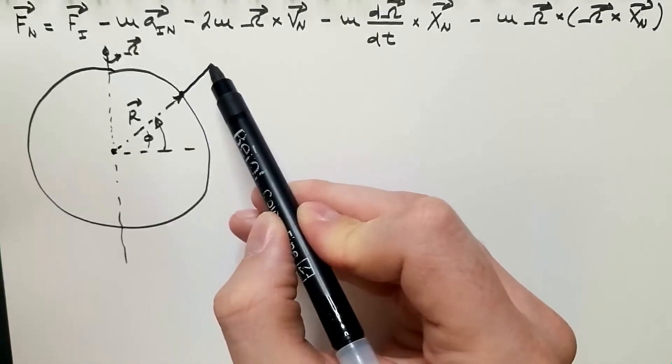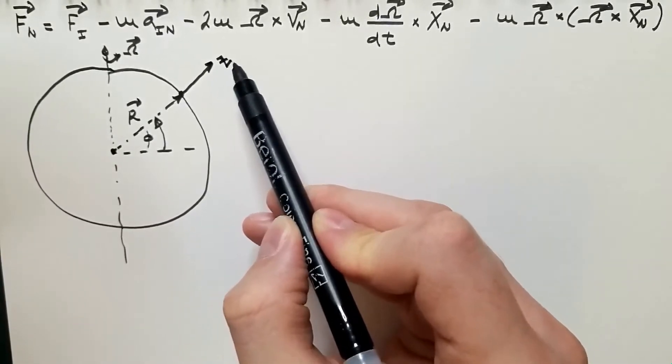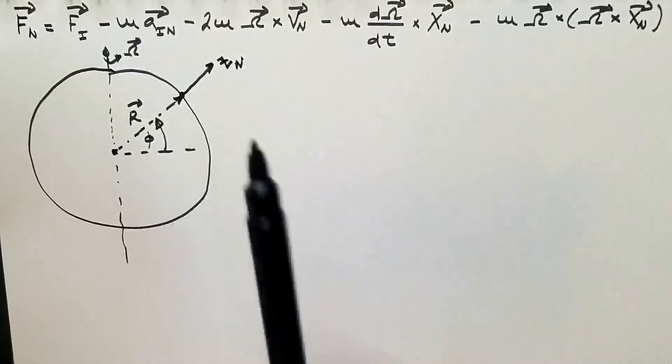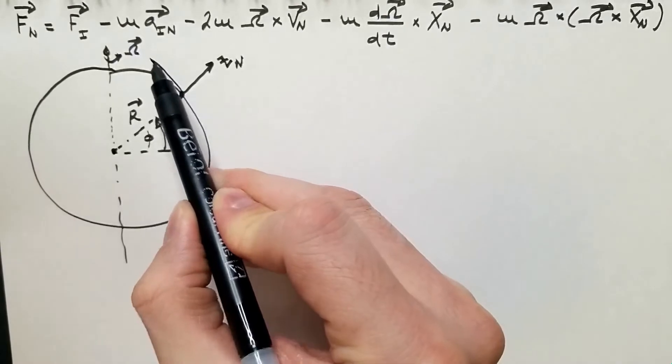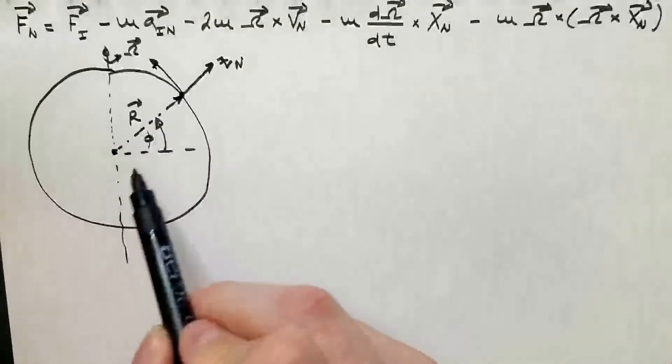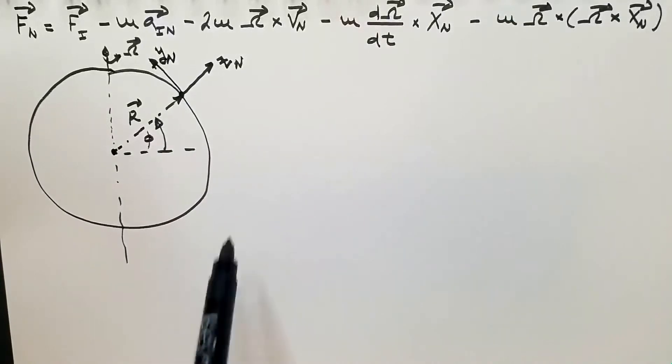This point over here is actually a non-inertial reference frame because it is rotating with this angular velocity omega. I will take the positive z direction upward, positive y direction of this reference frame is towards the north, and positive x direction is into the page or towards the east.